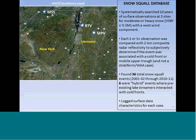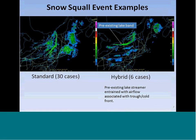In total there were 36 snow squall events covering the winters of 2001-2002 through 2010-2011. We also looked for hybrid events where a pre-existing lake streamer interacted with a cold front, and we logged surface data characteristics for each case. These squalls appear as a low-topped convective line, and it's useful to think of them as a center of a mesoscale convective system. In hybrid cases, a pre-existing lake streamer extending off Lake Ontario becomes entrained into a mobile upper-level trough, but the end result — a brief burst of moderate to heavy snow — is generally the same.